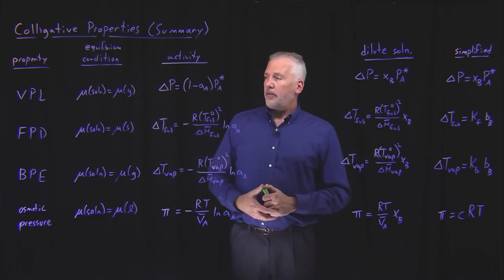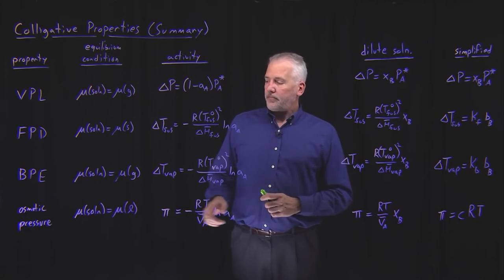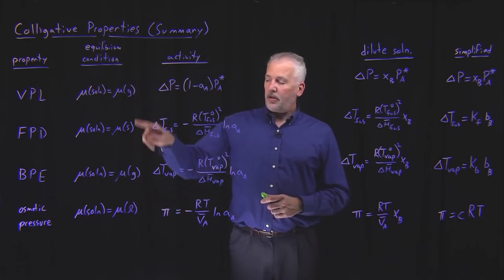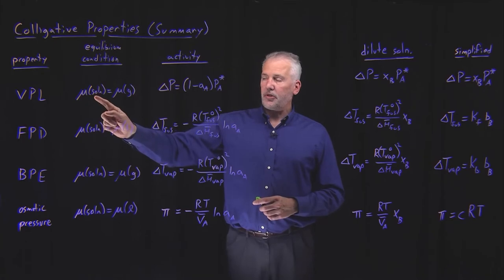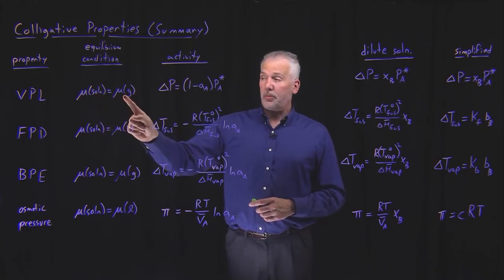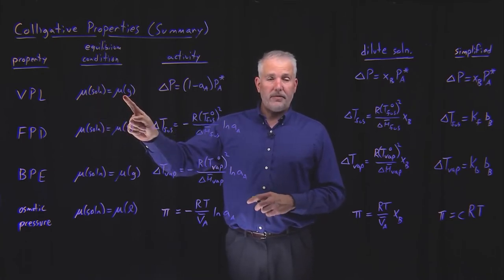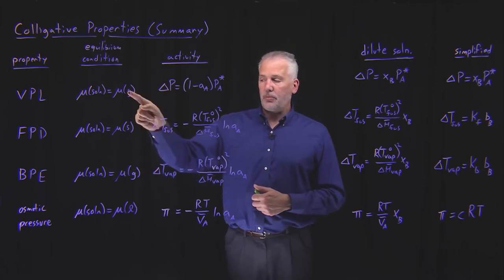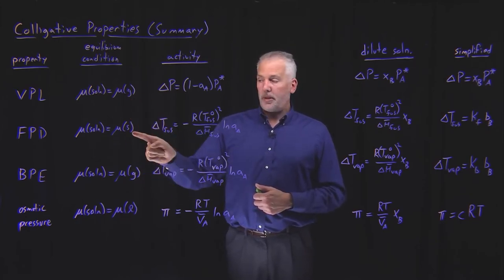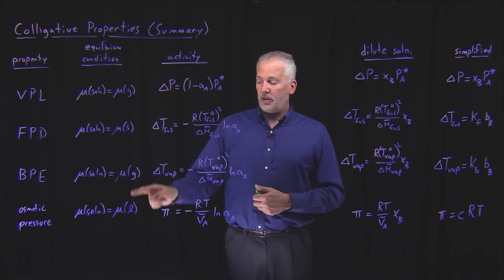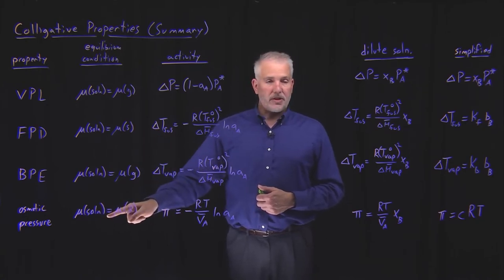Comparing all four of the colligative properties, they started out with the assumption that the chemical potential in the solution is equal to the chemical potential in some other phase if that solution is in equilibrium with the phase. Maybe it's evaporating or boiling, maybe it's freezing to form a solid, or maybe in an osmotic pressure setup, it's in equilibrium with the pure solvent.